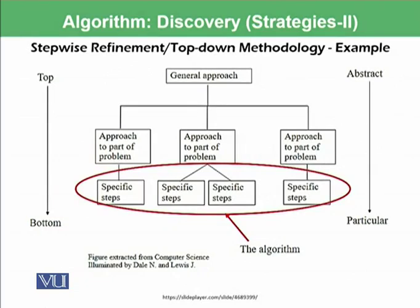Let's have a diagrammatical overview of it. We have a general problem or approach, and then we convert that problem into sub-problems. Each sub-problem then has some specific steps, and you make your algorithm at that level.